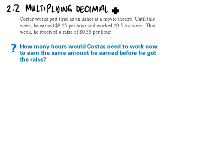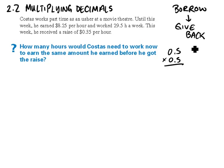Now multiplying decimals is based on the concept of borrowing and then giving back. So we borrow and then we give back. If we take a simple example first of 0.5 times 0.5, well we don't know how to multiply that yet so let's borrow.